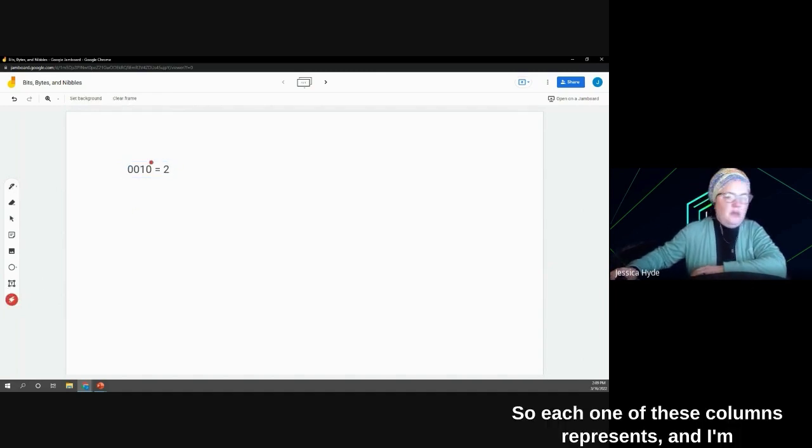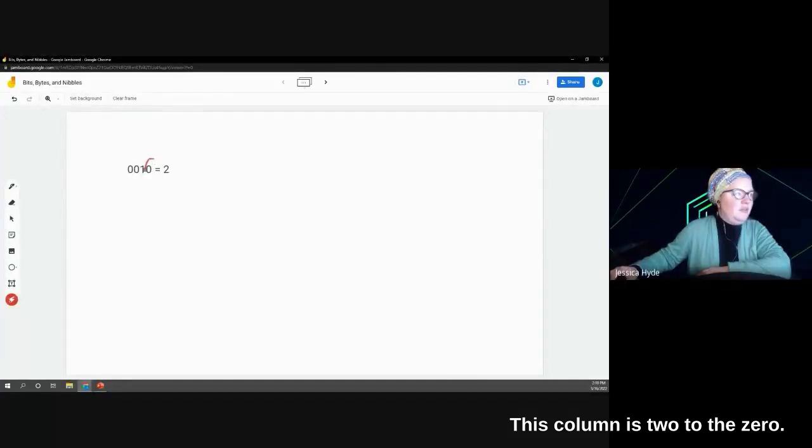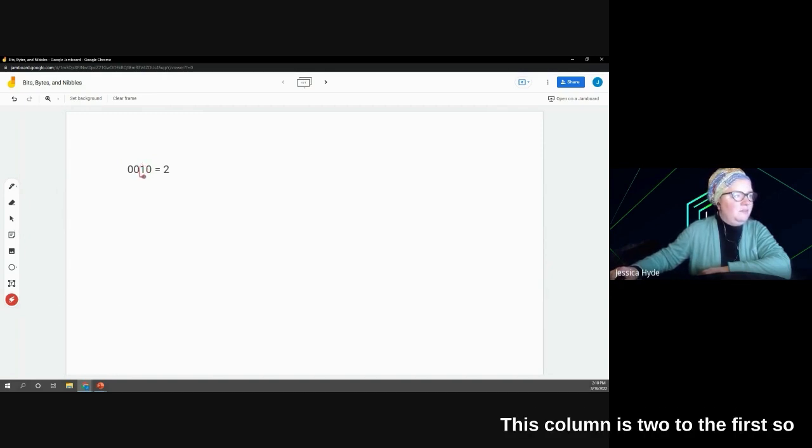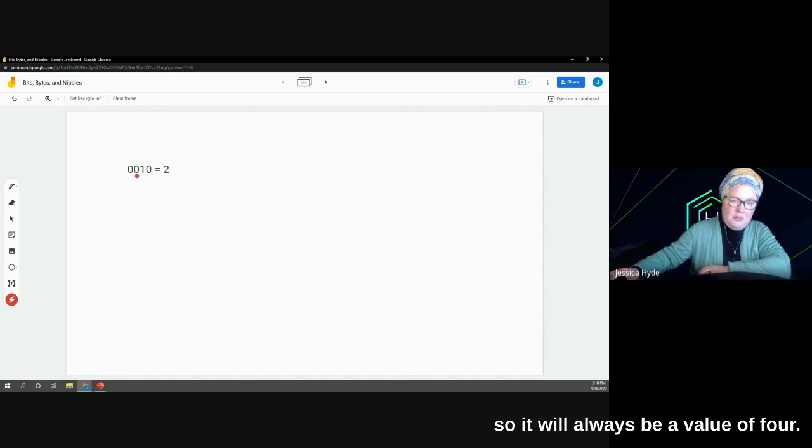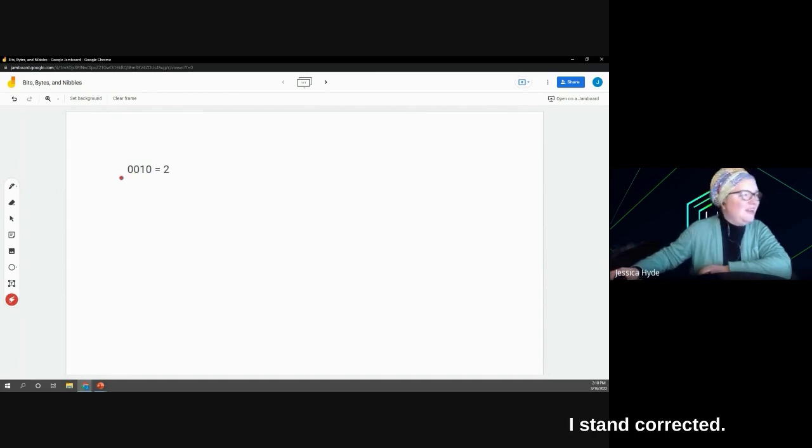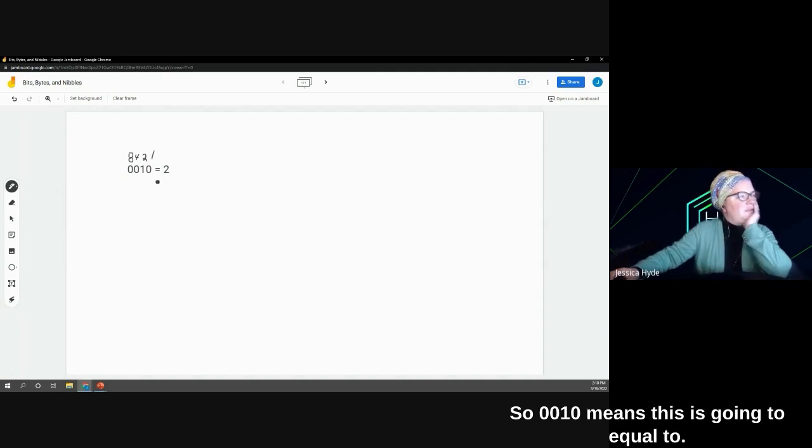I'm going to go ahead and type out our binary of 0, 0, 1, 0. Now, how do we know that this is equal to decimal 2? So each one of these columns represents, and I'm going to explain this a couple different ways. This column is 2 to the 0, so this will always be worth a value of 1. This column is 2 to the 1st, so it will always be a value of 2. This column right here is 2 to the 2nd, so it will always be a value of 4. And then this one is 2 to the 3rd, so this one will be a value of 8. So 0, 0, 1, 0 means this is going to equal 2.